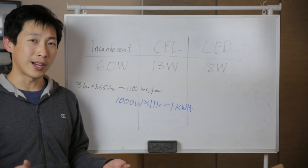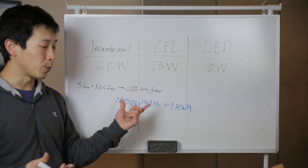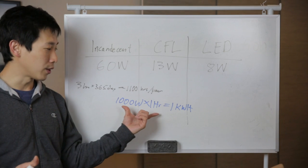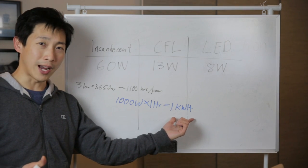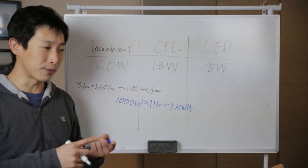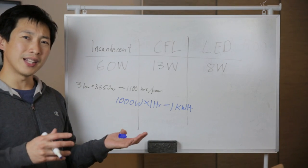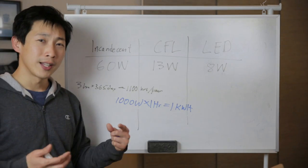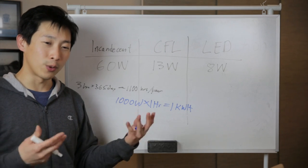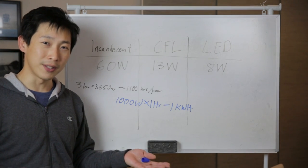A heater uses about 1000 watts of electricity, and if you run that for 1 hour, you multiply those together and you get 1 kilowatt hour. Depending on where you live, your electricity rate might differ, but over here, it's about 11 cents per kilowatt hour. That means running that heater for 1 hour costs you 11 cents.